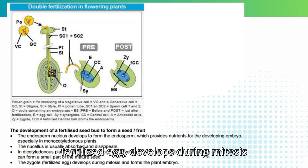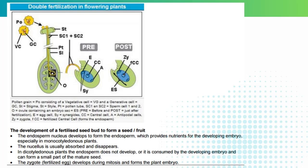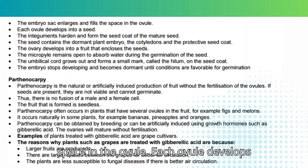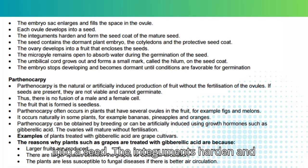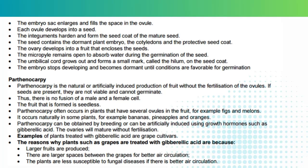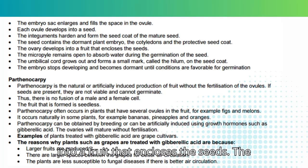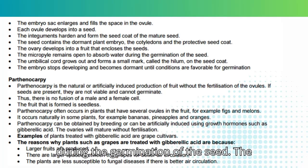The zygote, or fertilized egg, develops during mitosis and forms the plant embryo. The embryo sac enlarges and fills the space in the ovule. Each ovule develops into a seed. The integuments harden and form the seed coat of the mature seed. The seed contains the dormant plant embryo, the cotyledons, and the protective seed coat. The ovary develops into a fruit that encloses the seeds.